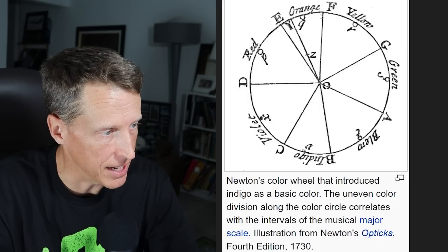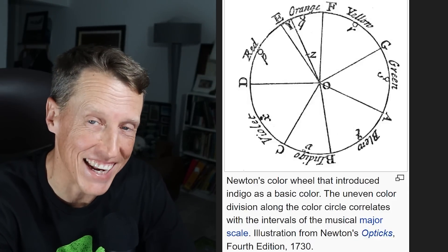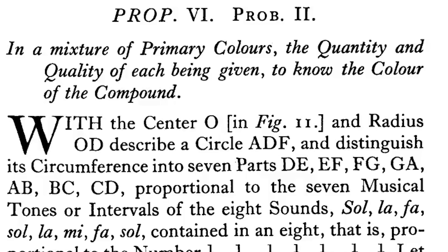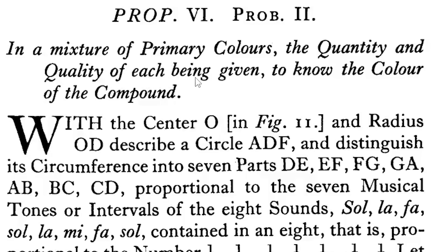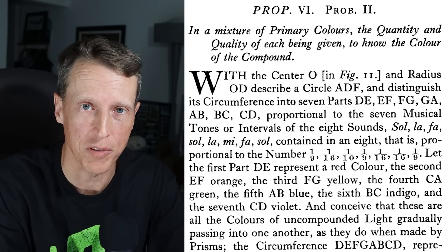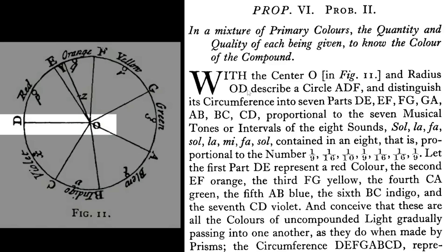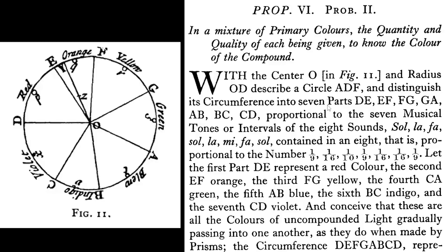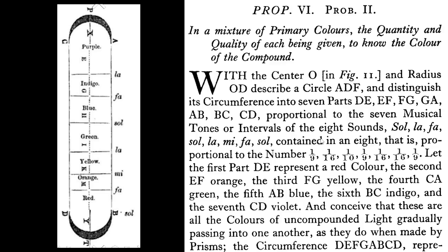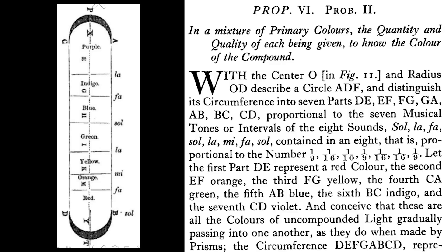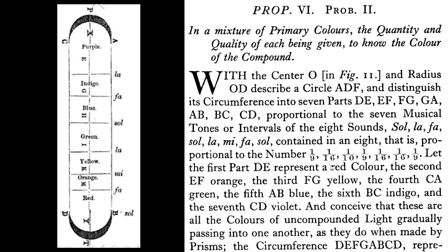He noted the primary colors as well. But what's quite interesting is that he illustrated this based on the intervals of the musical major scale. He did it off the musical major scale. As we go here, A, B, C, D, E, F, G. And what he saw is it actually repeats. In a mixture of primary colors, the quantity and quality of each being given to know the color of the compound. With center O and radius OD, describe a circle and distinguish its circumference into seven parts proportional to the seven musical tones or intervals of the eight sounds: Sol, La, Fa, Sol, La, Mi, Fa, Sol contained in an octave. Let the first part represent a red color and then he goes through each of the colors. I tried to figure out what this means. I couldn't really attribute to the actual color wheel.